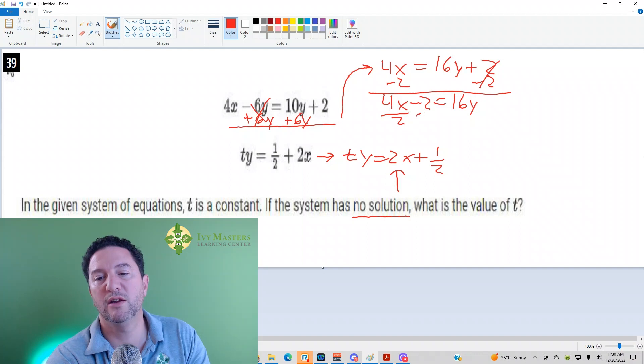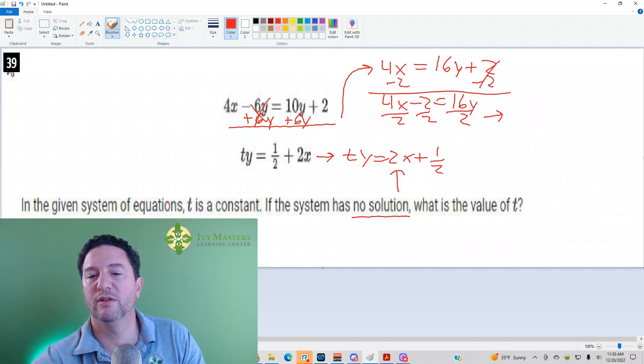So basically, you're dividing each by 2 individually, is what I'm trying to say. And then what we get is 2x minus 1 equals 8y.